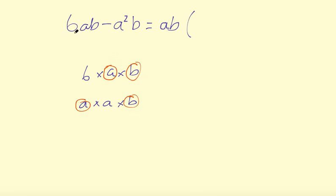And then what goes in the brackets is what's left over in each term. So 6ab, if we divide that by ab, we're just left with 6. And I've got a negative. And then if we take ab out of a squared b, what I'm left with is a.